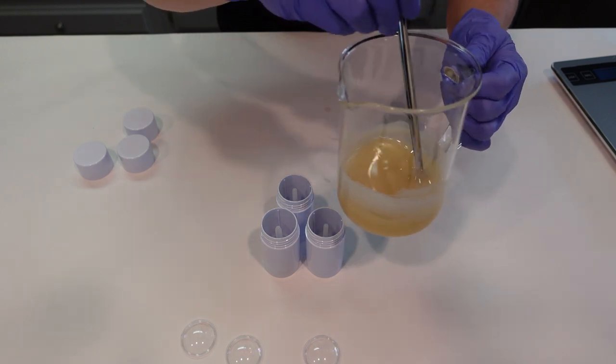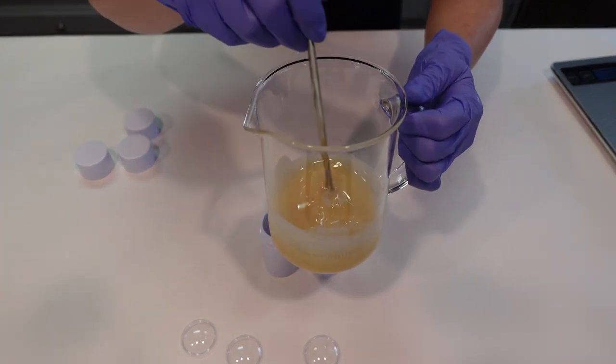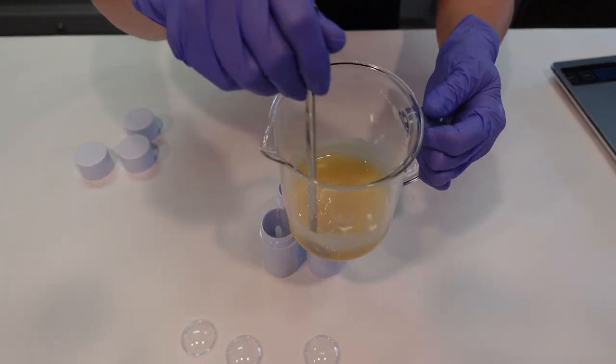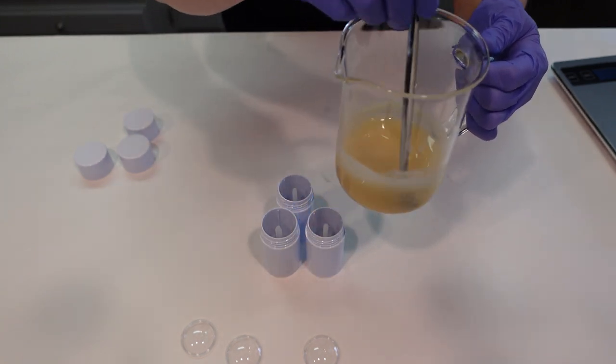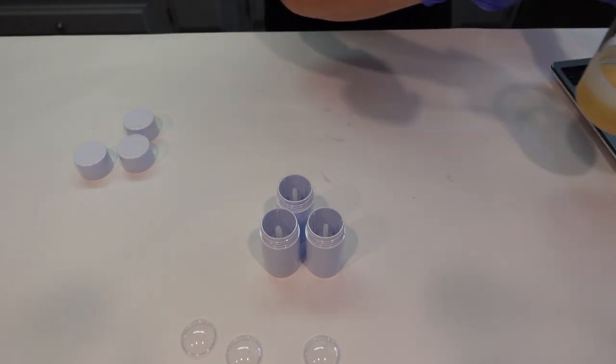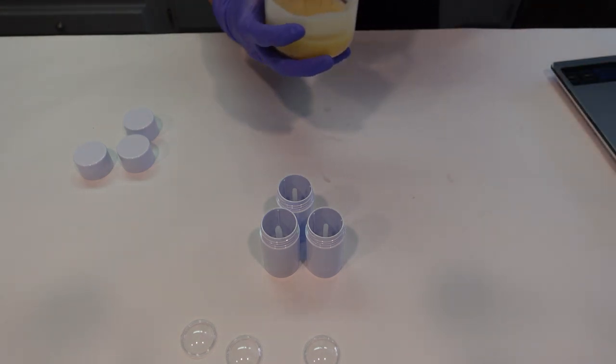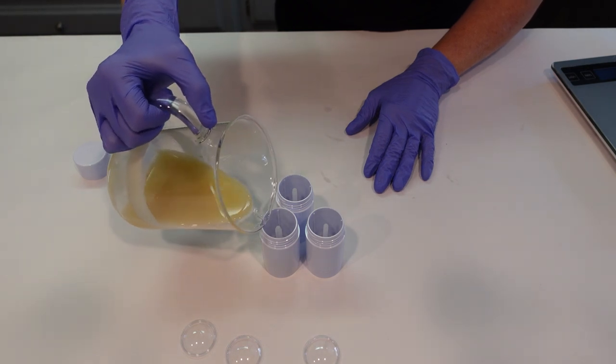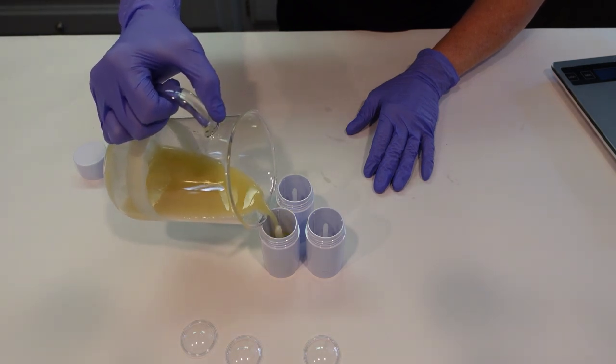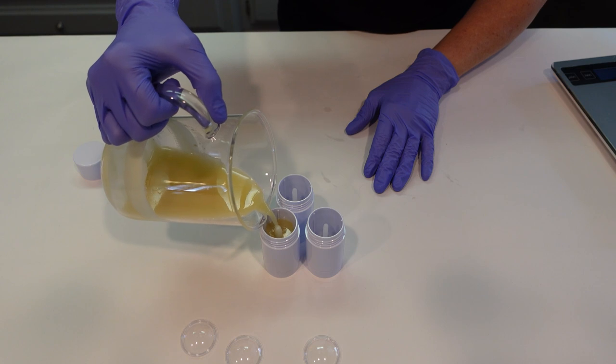So this formula does set up rather quickly. It's not going to go clear or transparent because we do have the addition of the clay in there, so it's also always going to look opaque like that. All right, so we're just going to go ahead and pour into our little one ounce containers.